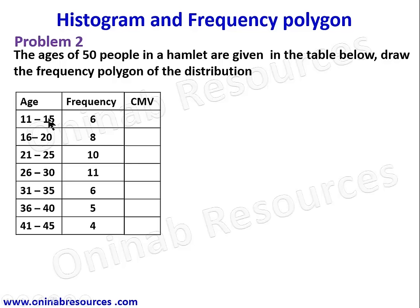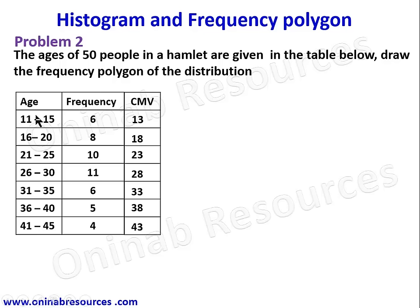Computing the mid values: 11 plus 15 divided by 2 gives 13; 16 plus 20 divided by 2 gives 18; 21 plus 25 divided by 2 gives 23; 26 plus 30 divided by 2 gives 28; 31 plus 35 divided by 2 gives 33; 36 plus 40 divided by 2 gives 38; and 41 plus 45 divided by 2 gives 43.